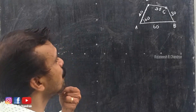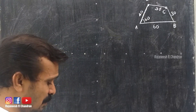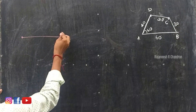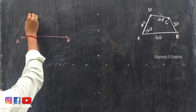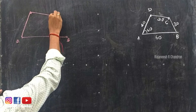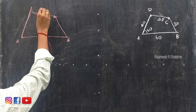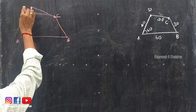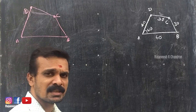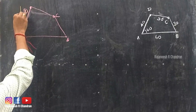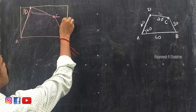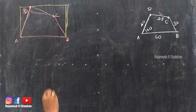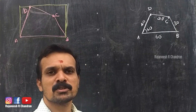In this manner we can complete the quadrilateral. So this is our quadrilateral. The first step is to inscribe the quadrilateral in a rectangle, so that is also completed. Now we are going to draw the isometric view.